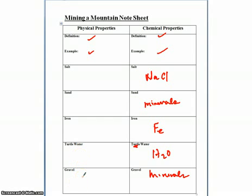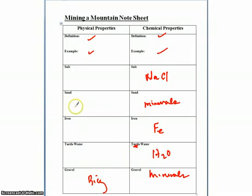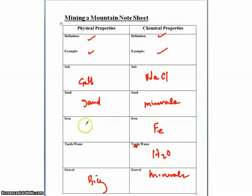I started to say: if you had to think about the differences between these things — a lot of people right off the bat said gravel is big, relatively big compared to the smaller sand, salt, and iron.